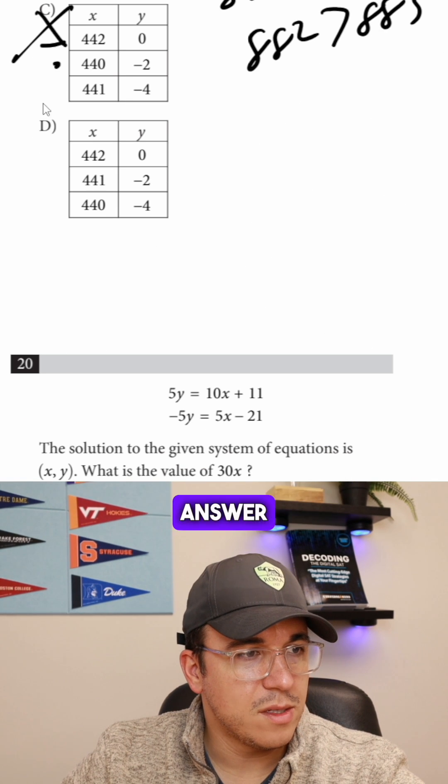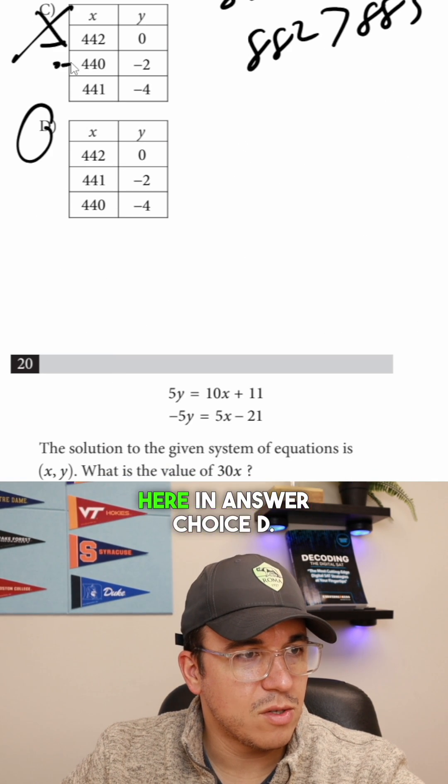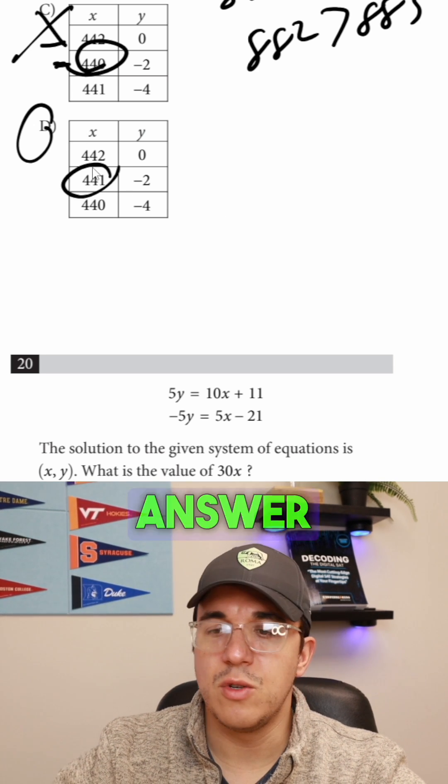So we automatically know that it's answer choice D. And you can see there's a change here in answer choice D. Instead of saying 440, it's 441, and that's going to be the change that we needed. So we're going to choose answer choice D.